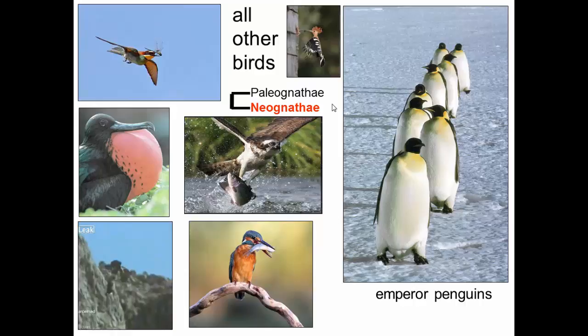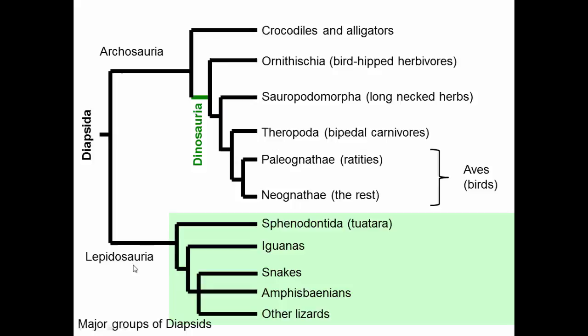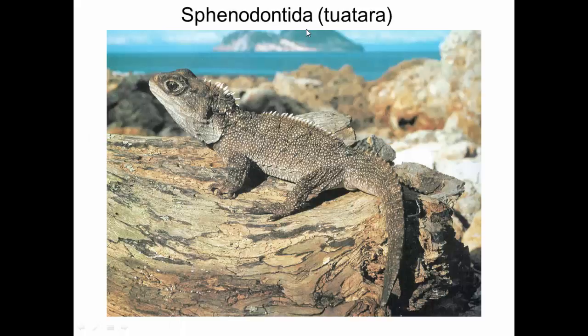That's the Archosaurian group. Now let's move down to Lepidosauria, which includes the rest of the reptiles: Sphenodon or tuatara, iguanas, snakes, amphisbaenians, and lizards. The tuatara, the national animal of New Zealand, looks not that different from other lizards, but has highly unusual anatomical features — a pineal eye for light-sensing, very different neck vertebrae, and they live their lives in slow motion. They're very different in many ways from the other Lepidosaurs.